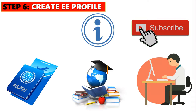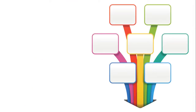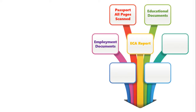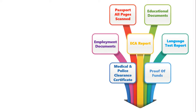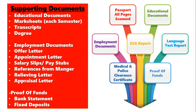After creating your Express Entry profile, you should start gathering documents to upload once you receive your ITA, to prove that the information you provided is true. The list includes: your passport with all pages scanned including stamps, your education documents, employment documents, ECA report, and language test report. There are also three important documents required after receiving your ITA: your medical report, police clearance certificate from every country where you have stayed for more than six months, and proof of funds.